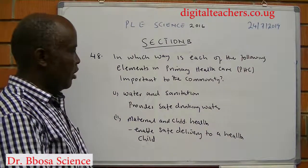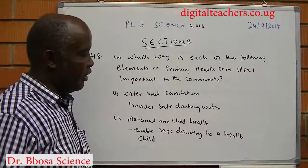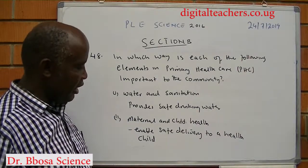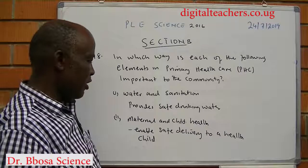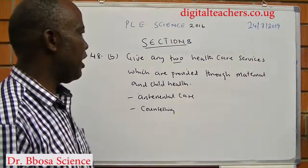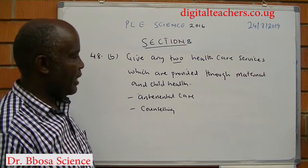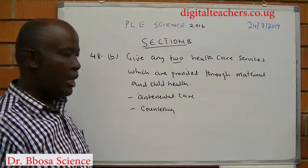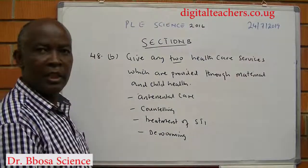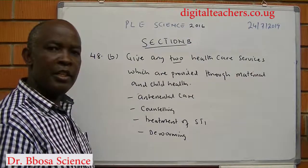State in which way each of the following elements in primary health care is important to the community. Water and sanitation provides safe drinking water. Maternal and child health: it ensures safe delivery of a healthy child. Health care services provided through maternal and child health include antenatal care, counseling, treatment of sexually transmitted diseases, and child immunization.